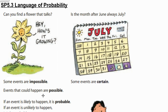In this lesson we will be talking about the language around probability. When we talk about probability, we're talking about whether or not something is likely to happen, or what are the chances that something is going to happen.